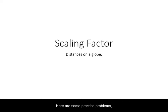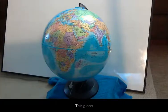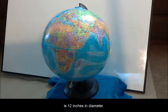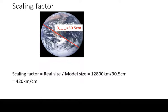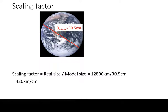Here are some practice problems using the scaling factor on a globe. This globe is 12 inches in diameter, which is equivalent to 30.5 cm. If we plug this into the formula for scaling factor, we get 420 km per cm.